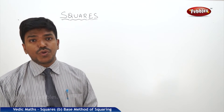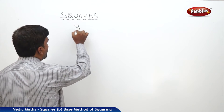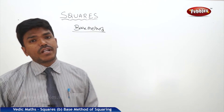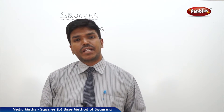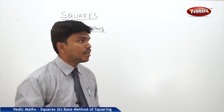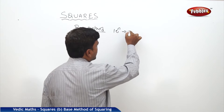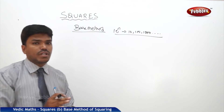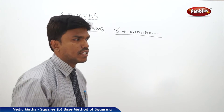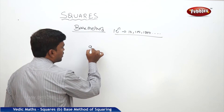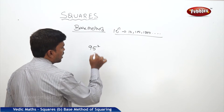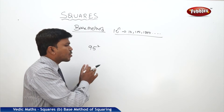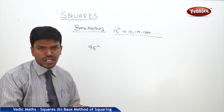Now, squares using the base method. How to find out squares of numbers which are nearer to the base. Base numbers are in the format 10 power n — that is 10, 100, 1000, and so on. For example, I need 95 squared. If I compare 95 with the base 100, 95 is closer to 100, so we take the base as 100.